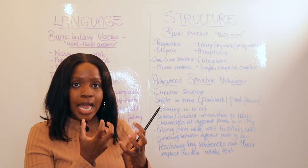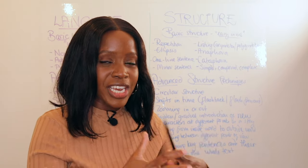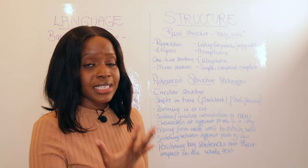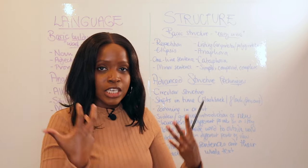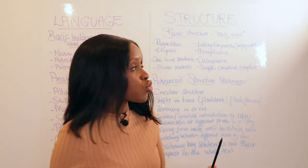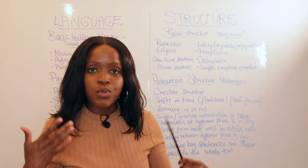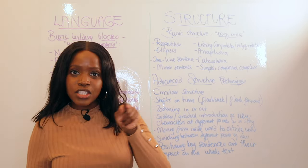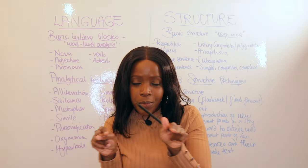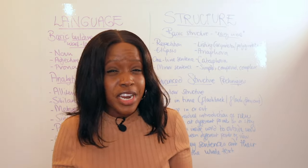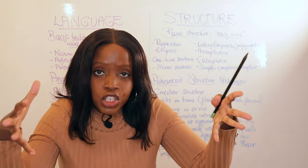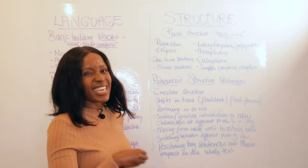That's the definitive list of language techniques — memorize these and get accustomed early in the year to spotting and writing about them. Now let's look at structure. The easy wins: repetition is a really easy structural technique, as is ellipsis — the three dots. A one-line sentence is also powerful: you're reading through a paragraph and then there's just one line, really shifting your focus.